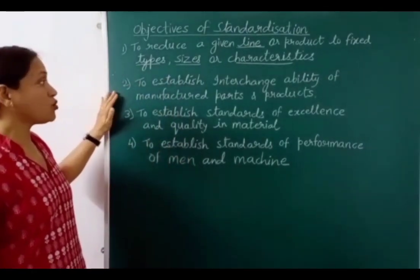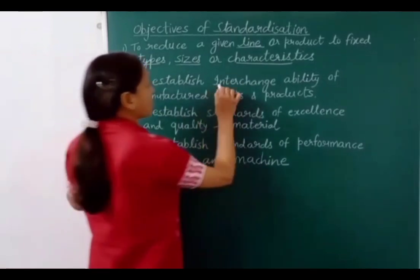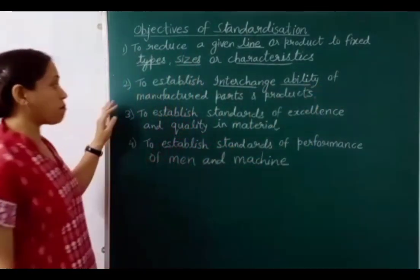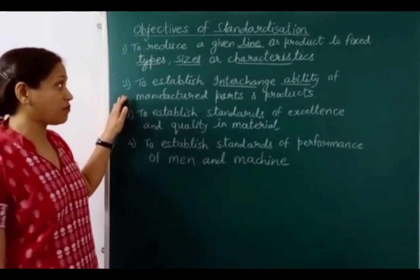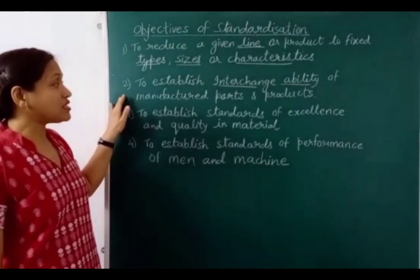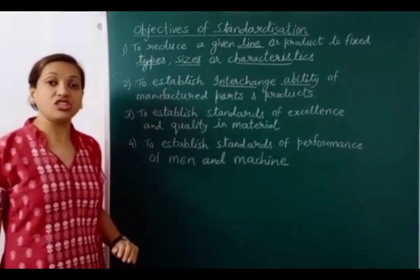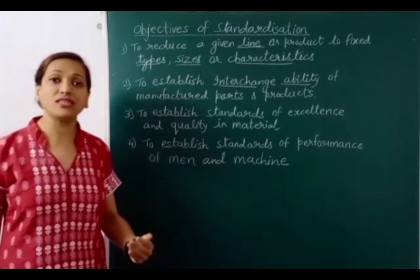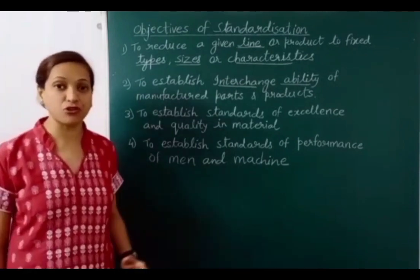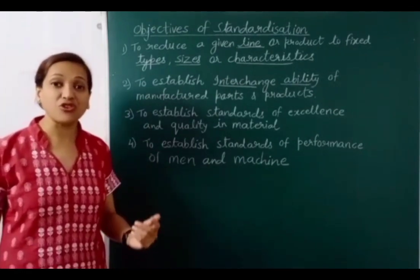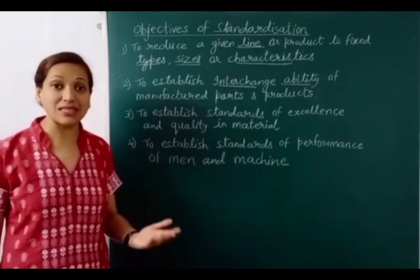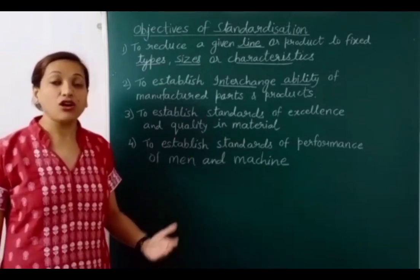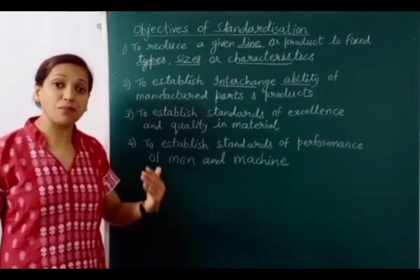The second objective is to establish interchangeability of manufactured parts and products. For example, nut bolts come in standard sizes and fit any machine. Similarly, batteries, tyres, and other vehicle parts are standardized so they fit vehicles from any company.